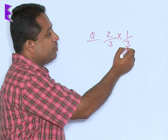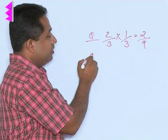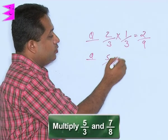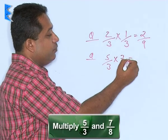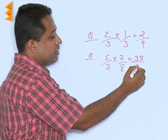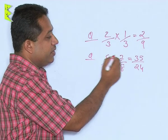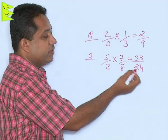So, 2 by 3 into 1 by 3 is simply 2 by 9. 5 by 3 into 7 upon 8 is simply 5 into 7, 35, and 3 into 8 is 24. So, simple multiplication of numerator with numerator and denominator with denominator.